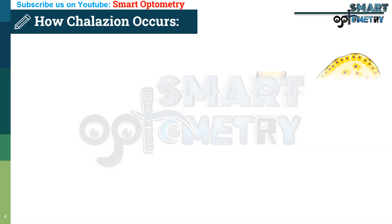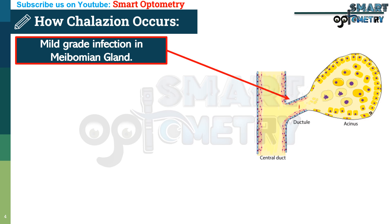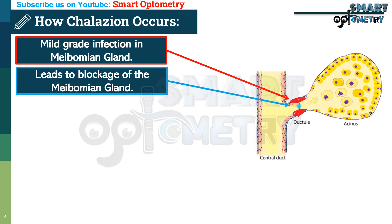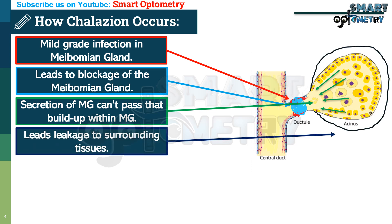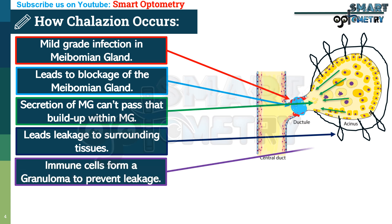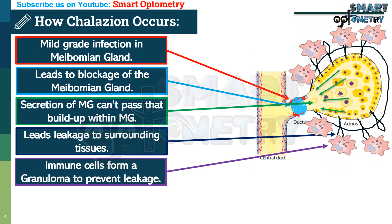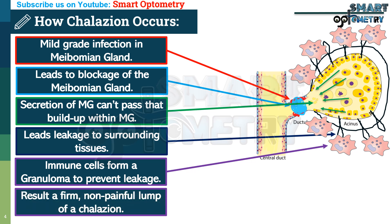How does chalazion occur? First, a mild grade infection occurs in the meibomian gland by organisms of very low virulence. This mild infection leads to blockage of the meibomian gland, and secretion or lipid builds up within the gland. Continuous secretion leads to leakage from the meibomian gland into surrounding tissues. Immune cells gather around the leaked lipid and form a granuloma, creating the characteristic firm, non-painful lump of a chalazion.